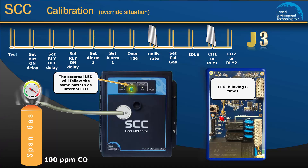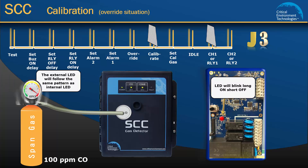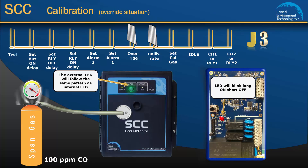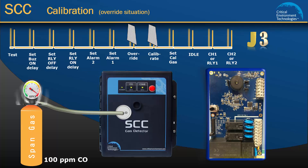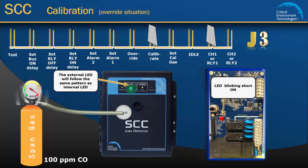Similarly, if during the span gas calibration the internal LED and external channel 1 LED lights blink a pattern of long on and short off, you will need to do an override. Leave the jumper on calibrate and move the other jumper from channel 1 to override. If outside the override range, the fault LED will turn on solid, the channel 1 LED will turn off, and the test points will output 4 volts indicating the sensor cannot be calibrated. If the override procedure is complete, the internal LED and channel 1 LED lights will blink short on. Return the jumper from override to channel 1 and the jumper on calibrate to idle. This completes a successful calibration of channel 1.